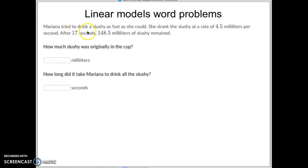Mariana tried to drink a slushie as fast as she could. She drank the slushie at a rate of 4.5 milliliters per second. After 17 seconds, 148 milliliters of slushie remained. How much was originally in the cup?